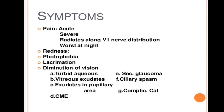The symptoms of uveitis include moderate to severe deep eye pain, which can also present as a headache, redness, photophobia, lacrimation, and decreased visual acuity.